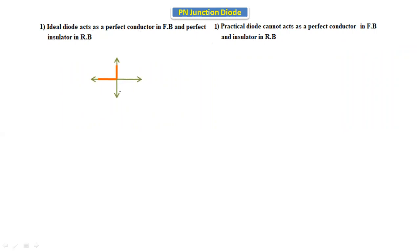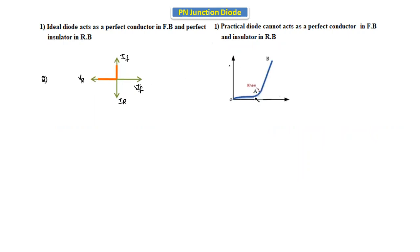If you see the characteristics of the ideal diode, on the x-axis it is the forward voltage, the other side is the reverse voltage, y-axis is the forward current and the reverse current — it starts conducting from zero. In the practical diode, in the forward bias the characteristics show it starts conducting from the cut-in voltage, not from zero, whereas in the ideal diode it starts conducting from zero volts.